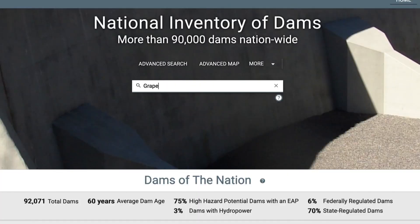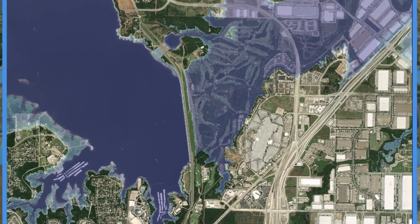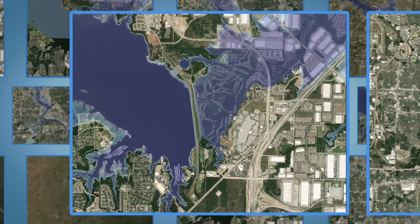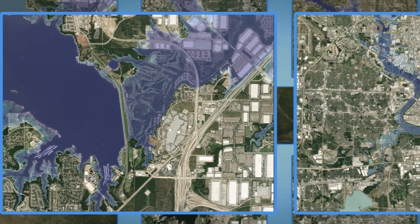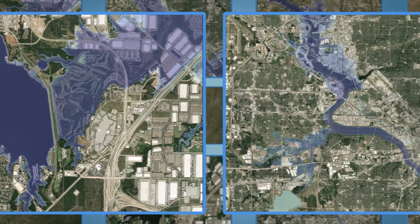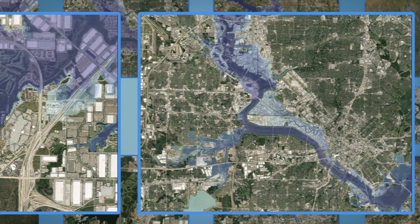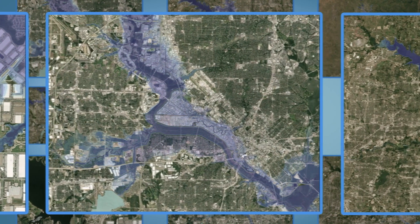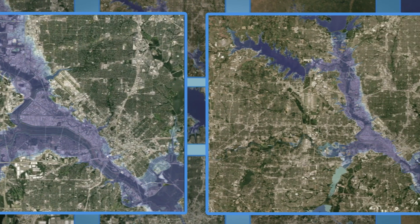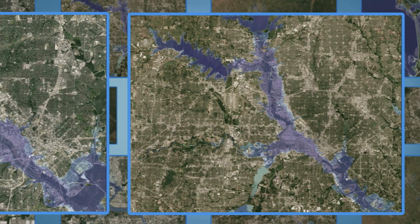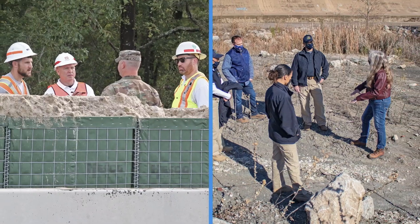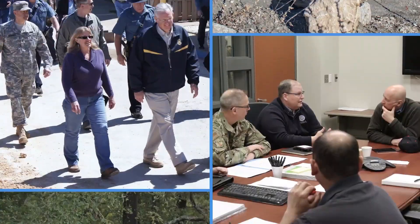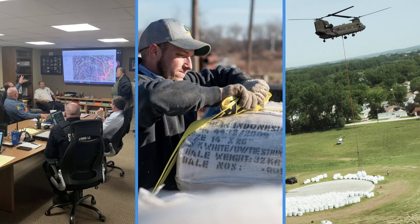Users viewing flood inundation maps on the NID can see how these scenarios may affect areas within their community and use this information to prepare in advance. Each map shows a shaded zone around and downstream of the dam that represents where water may go. However, water may not behave in real-time exactly as shown on a flood inundation map. Individuals trying to understand if they will be impacted should talk to local officials who can offer advice on how to prepare before a flood occurs.